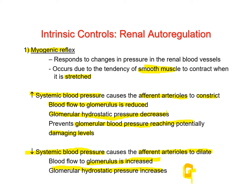When systemic blood pressure is low, afferent arteriole vasodilation causes the GFR to rise, since GFR is directly proportional to net filtration pressure. Conversely, afferent arteriole vasoconstriction causes GFR to drop. This is a built-in intrinsic autoregulatory way of maintaining a steady GFR in the face of shifting systemic blood pressures.